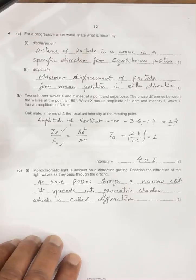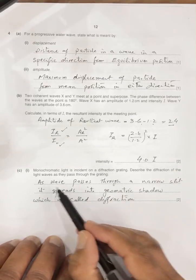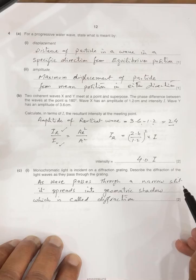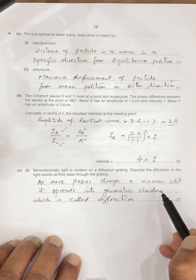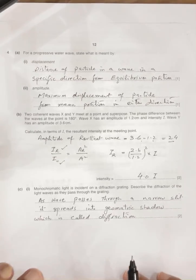Now, the question is microwave, monochromatic light is incident on the diffraction grating, describe the diffraction of the wave. Yes, we have to define, we have to explain, as wave passes through the narrow slit, it spreads in geometrical shadow, which is called diffraction.